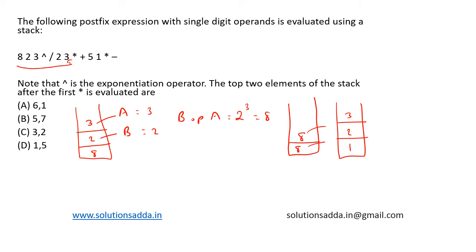At this point, the question asks for the top two elements of the stack after the first * is evaluated. Now we have received this * operator, so we pop these two and the multiplication results in 6. So we have 1 and 6. The question asks for the top two elements of the stack after the first * is evaluated, and the correct answer is 1 comma 6, or option A: 6 comma 1 (since the order is not mattering here). So option A, 6 comma 1, is the correct answer.